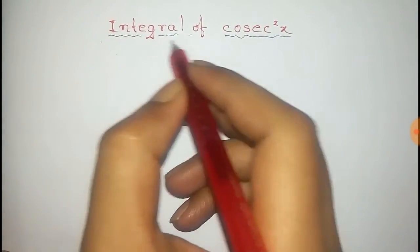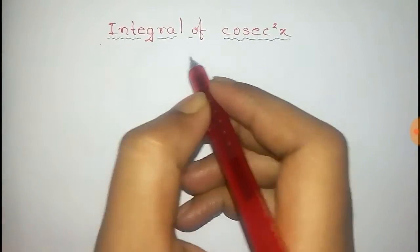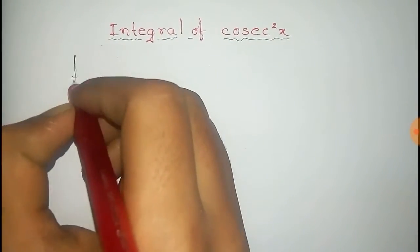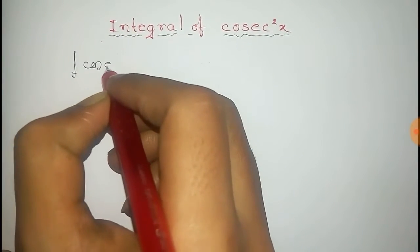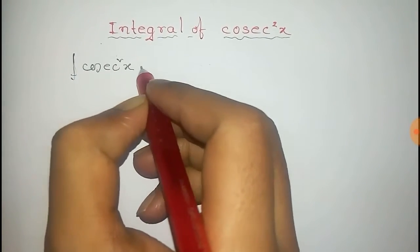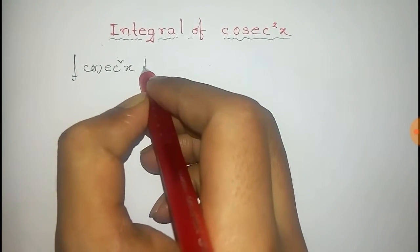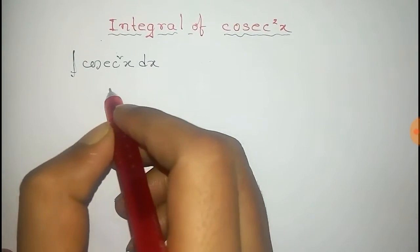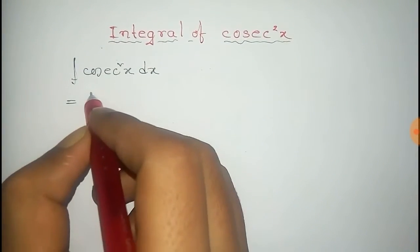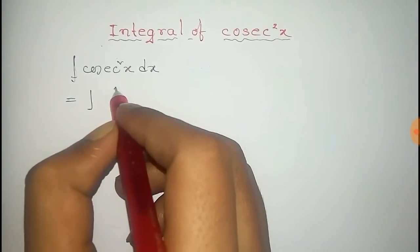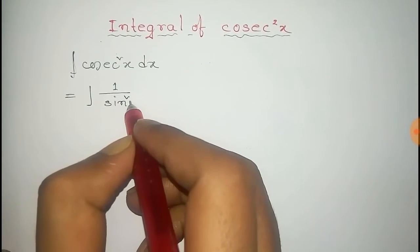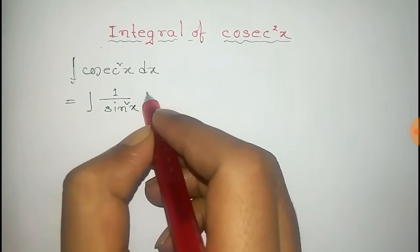In this video we will find the integral of cosecant squared x. So that is the integral of cosecant squared x dx. And that can be written as equal to the integral of 1 by sin squared x dx.